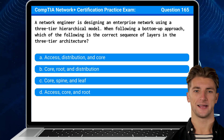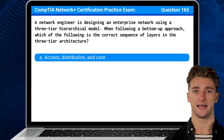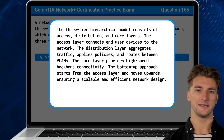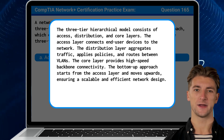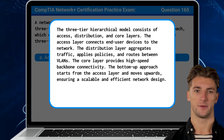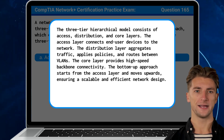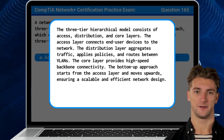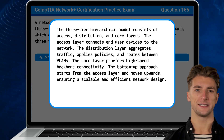The answer is A: access, distribution, and core. The three-tier hierarchical model consists of access, distribution, and core layers. The access layer connects end-user devices to the network. The distribution layer aggregates traffic, applies policies, and routes between VLANs. The core layer provides high-speed backbone connectivity. The bottom-up approach starts from the access layer and moves upwards, ensuring a scalable and efficient network design.